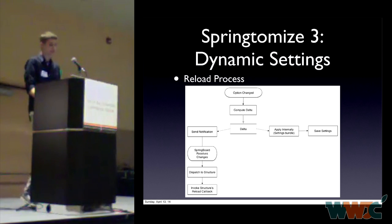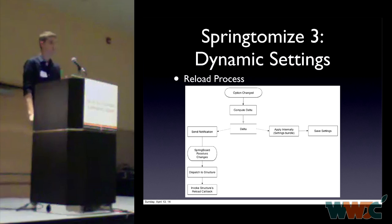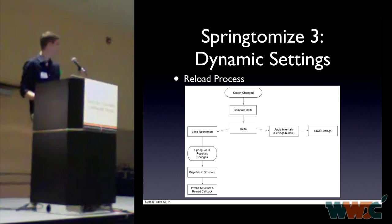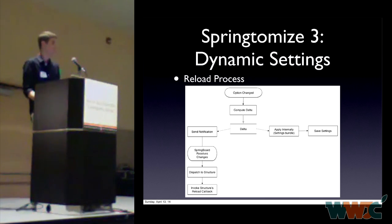The load process works like this: when an option is changed, a delta — a difference — is computed. That delta is both applied internally in the settings bundle and sent across the system to apply changes to Springboard. When applied internally, the settings bundle uses the library to save settings to disk. When Springboard receives the notification containing the changes, it routes them to the right structure and invokes the proper callback to reload the Springboard state related to that structure.